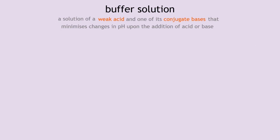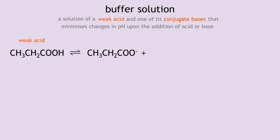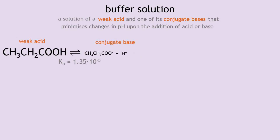The first component of an acidic buffer solution is a weak acid — let's take propanoic acid as an example. A weak acid will partially dissociate to form its conjugate base and hydrogen ions; it is an acid that partially dissociates in aqueous solution. We know the dissociation is partial by looking at the dissociation constant Ka, which is 1.35 × 10⁻⁵. This very low value means the equilibrium lies far to the left, so we have lots of undissociated propanoic acid and very little propanoate ions and hydrogen ions.